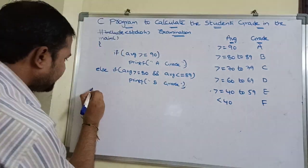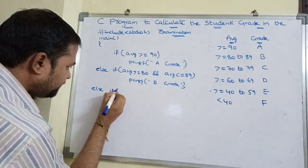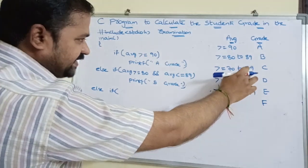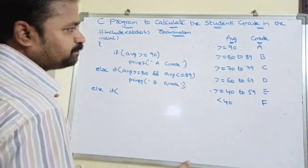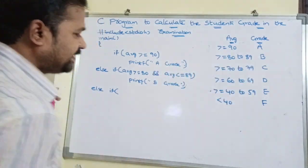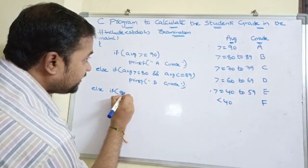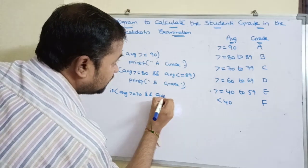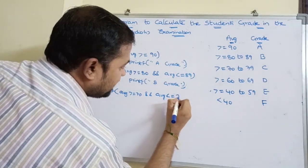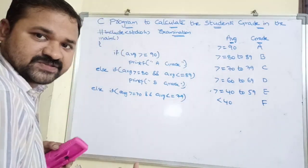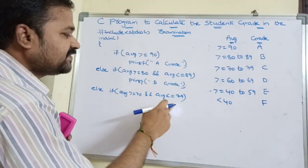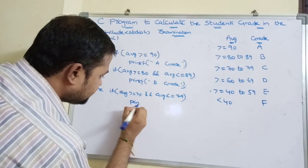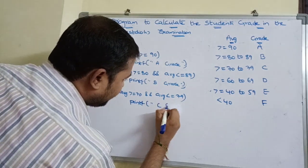Next, else if — again with a space between else and if. If the average is greater than or equal to 70 AND the average is less than or equal to 79, then print grade C.